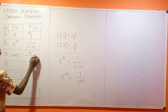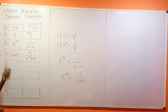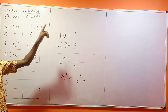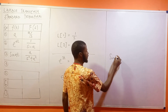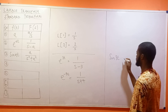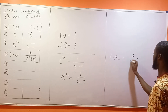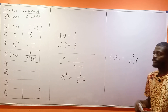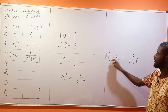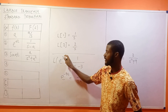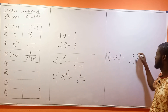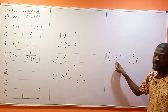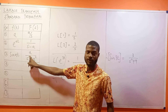The next one is sin(AT). If you take the Laplace transform of sin(AT), your result is A over S squared plus A squared. So if you have sin(3T), your result is going to be 3 over S squared plus 9, because A here is 3. The formula says A over S squared plus A squared.